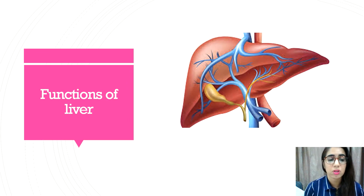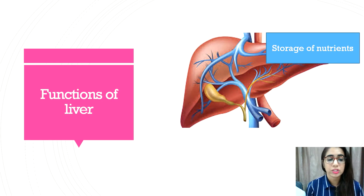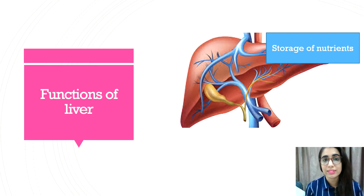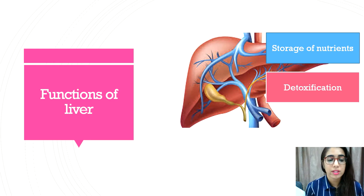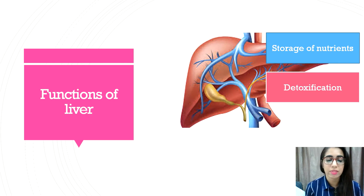Besides metabolism, the liver also functions in storage of nutrients, where the liver stores ions and fat-soluble vitamins — the ADEK vitamins. These are channeled into the blood through the hepatic portal vein, and excess glucose is stored in the liver as glycogen. The liver also carries out detoxification; substances harmful to the body such as alcohol, drugs, and insecticides are detoxified by the liver. The liver metabolizes these toxic substances, and the products are removed via the gallbladder or in the urine.